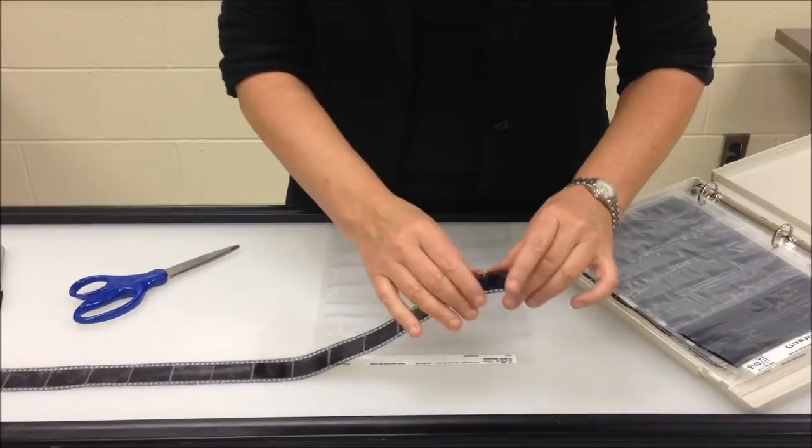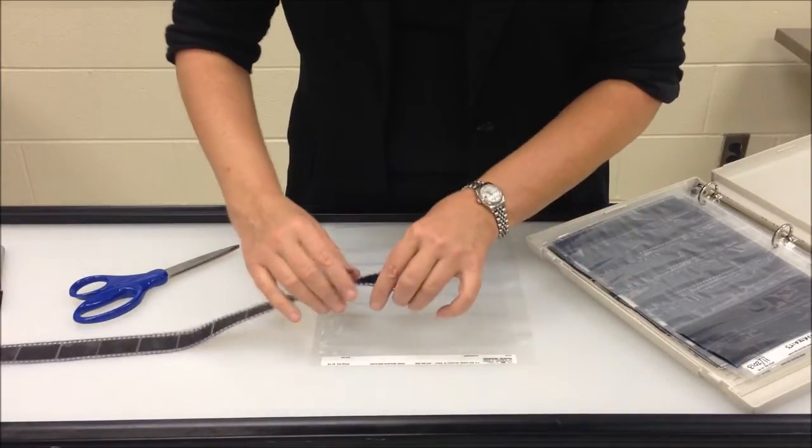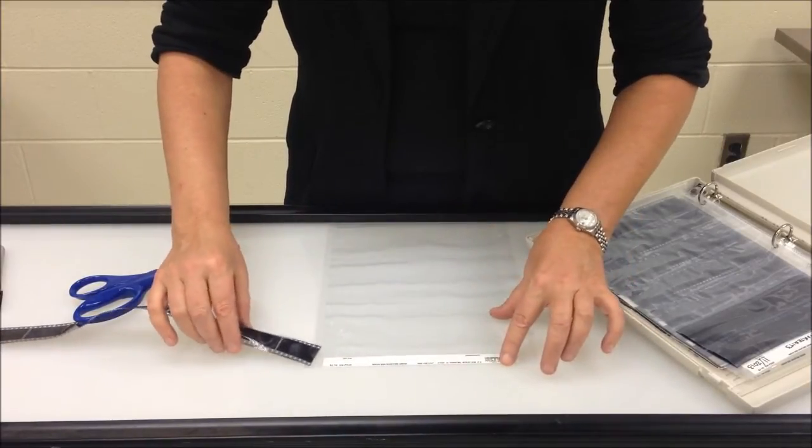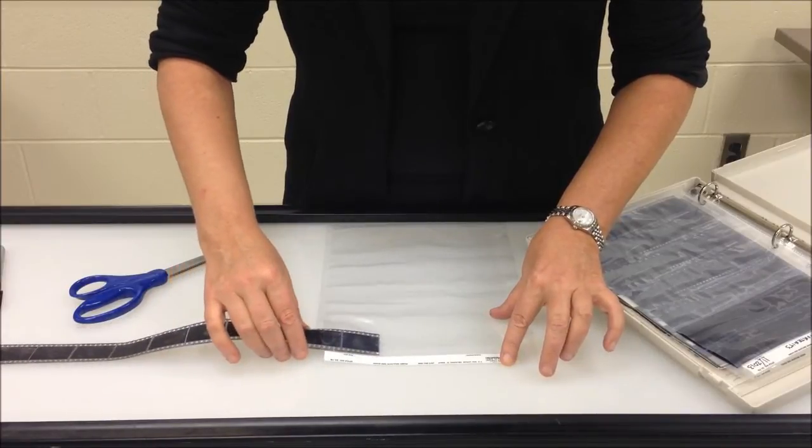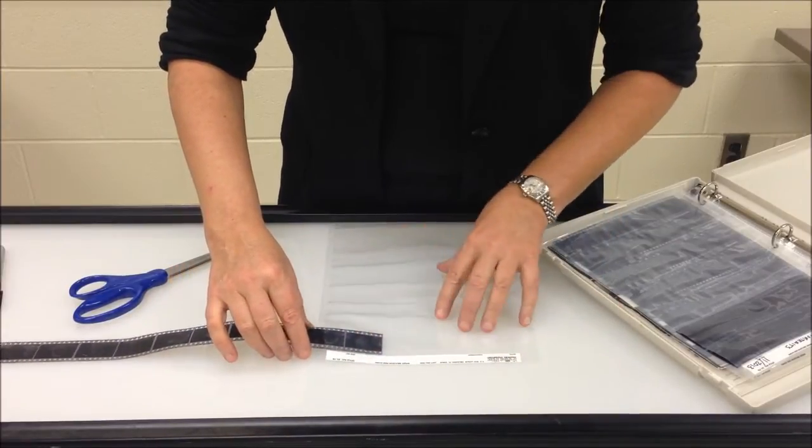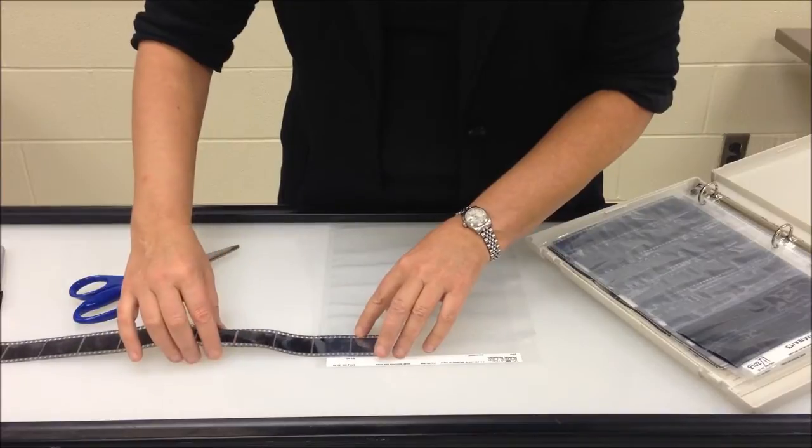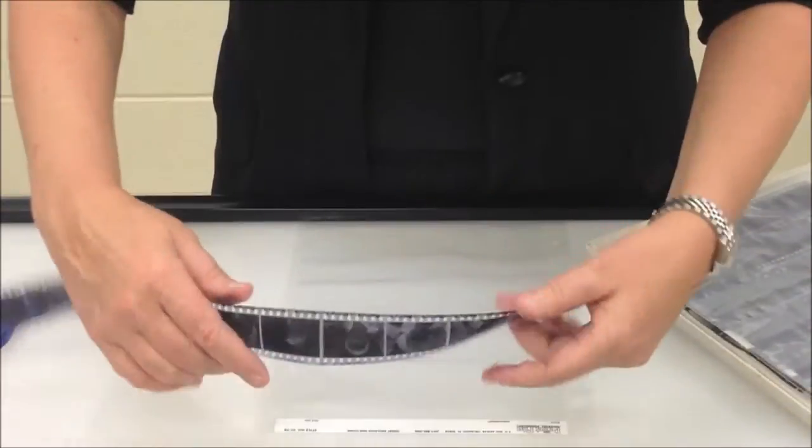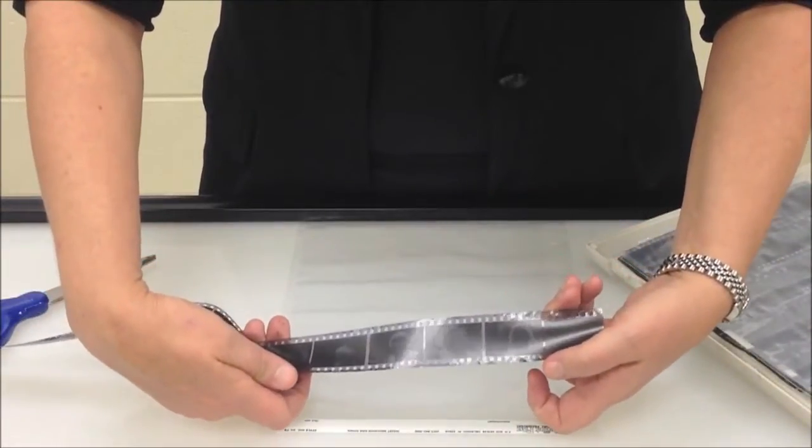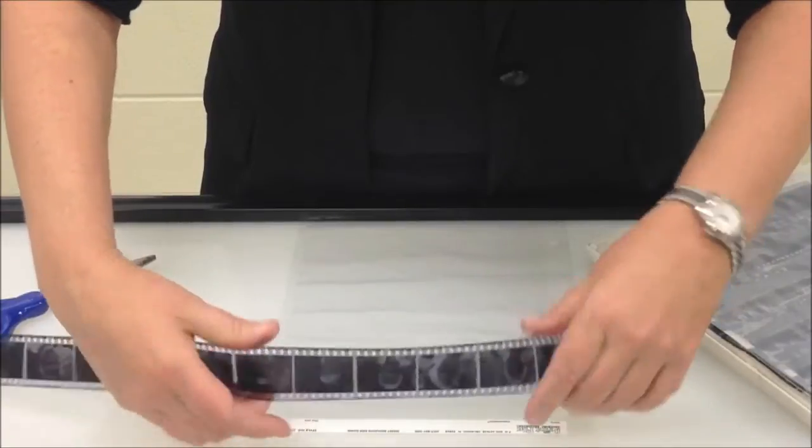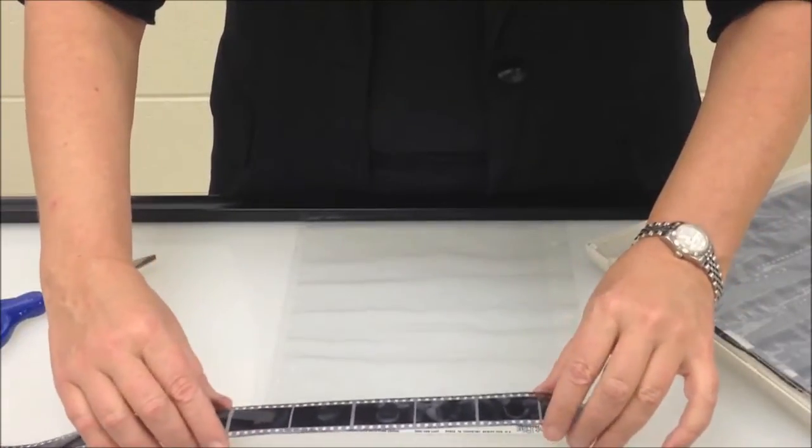When I cut this film and place it into the film sleeve, I'll be placing it emulsion side down, as indicated on the Print File Preserver at the top. The dull side of the film is the emulsion side. The shiny side is the top or non-emulsion side of the film.